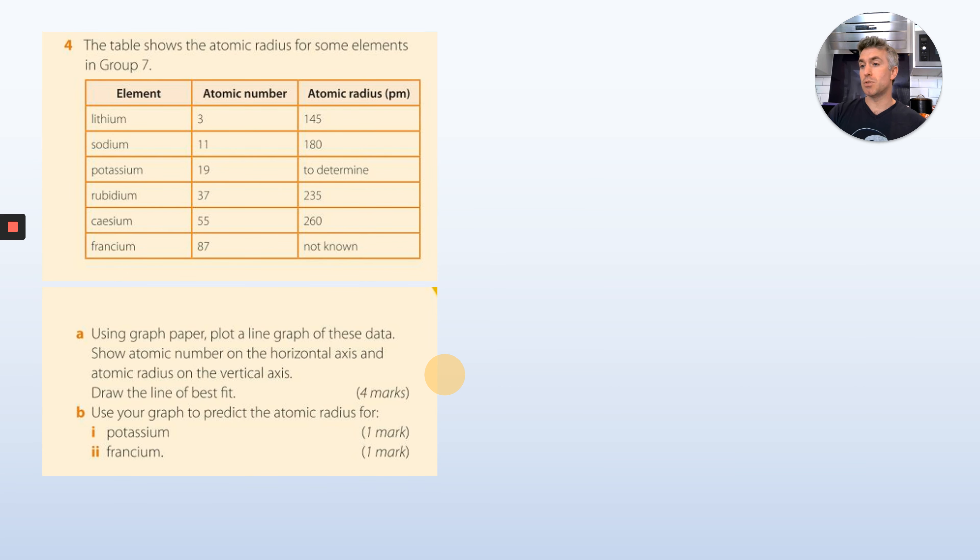Group 7 shows the atomic radius for some elements. Use graph paper, plot a line graph for these data. Show atomic number on the horizontal axis and atomic radius on the vertical axis. Don't be smart, just do it in Excel. Draw a line of best fit, and you can use that to predict the atomic radius for potassium and francium. So just do that in Excel. Not cheating, be smart.